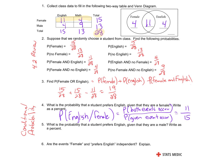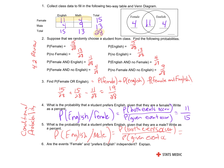I can also look at what is the probability that a student prefers English given that they're male. The only thing I'm going to change is my given. English given that they're male — this is going to be the probability of both events. So how many males liked English? That's going to be what's in my numerator. And then out of how many males. So it's going to be 4 out of 13.